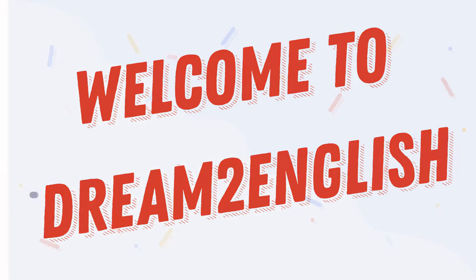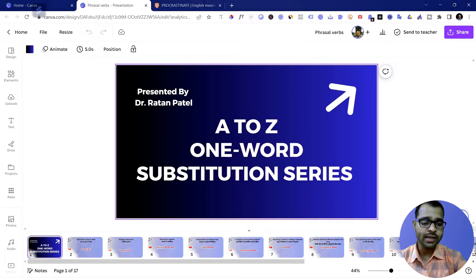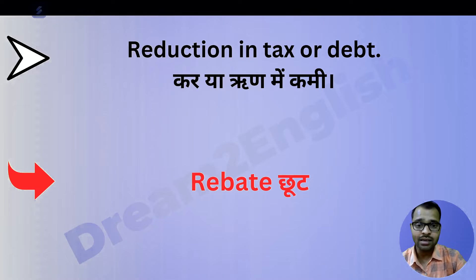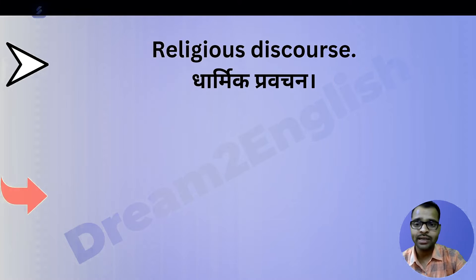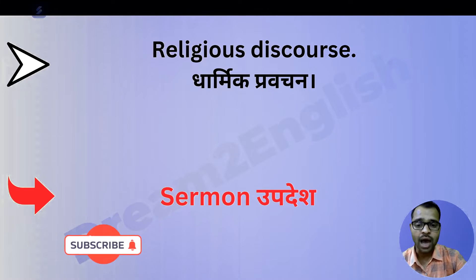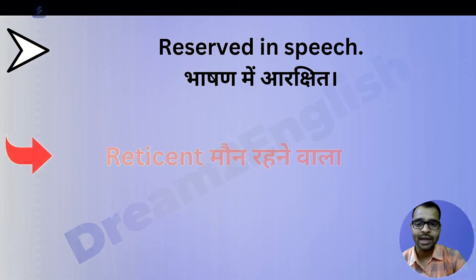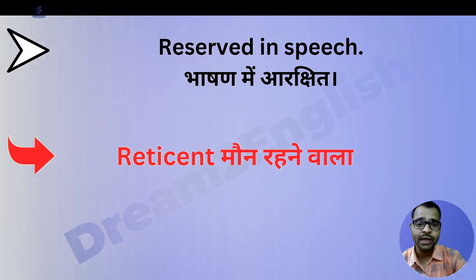Here is the first one: reduction in tax or debt — kar ya rind mein kami — this is called 'rebate'. Next one is religious discourse — dharmic pravachan — this is called 'sermon'. Next one is reserved in speech — mon rehene wala, mit bhashi, alp bhashi — this is called 'reticent'.